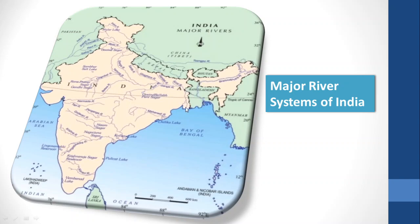The third Himalayan river is the Brahmaputra. It also originates near Lake Mansarover in Tibet. The river flows eastward parallel to the Himalayas and near Namcha Barwa it takes a U-turn, enters Arunachal Pradesh, crosses Assam, enters Bangladesh, joins the Ganga, and falls into the Bay of Bengal. These are the three major Himalayan river systems.